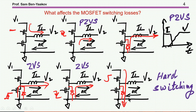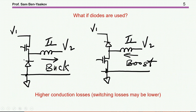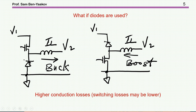This hard switching event is the major cause of switching loss. What happens if I don't have a transistor — just a diode? Well, it's the same thing except the conduction losses will be larger, and the switching losses may be a little lower if this is a Schottky diode — in that case reverse recovery is less of a problem — but other than that it's the same situation.